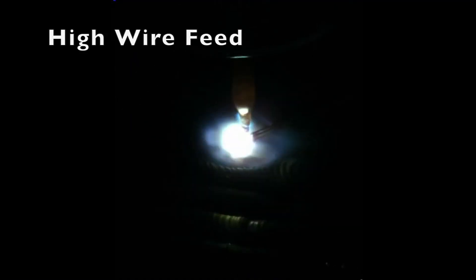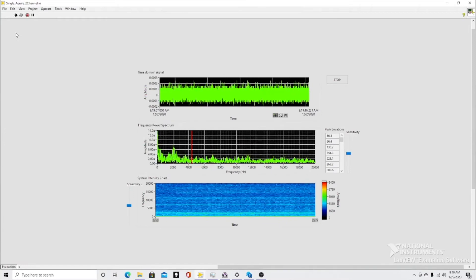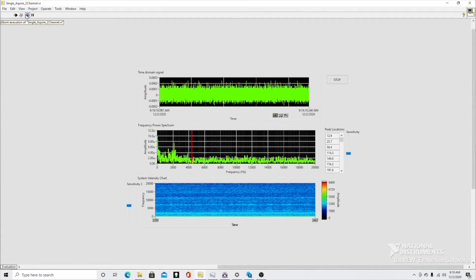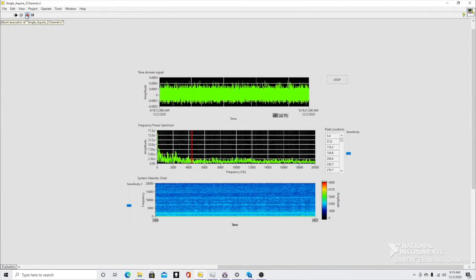A high wire feed weld is where the wire feed is positioned too high, resulting in a dripping and puddling of the weld. You can see the dripping here, which produces a distinct noise. The noise from the high wire feed causes spikes in our FFT and charts, which indicates that a possible defect is occurring.